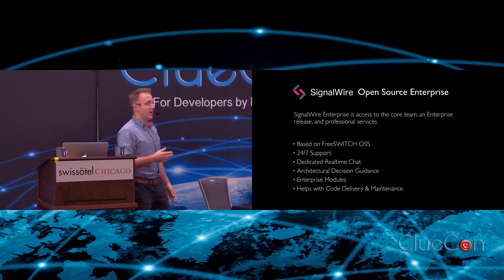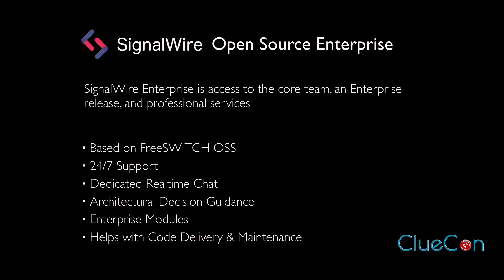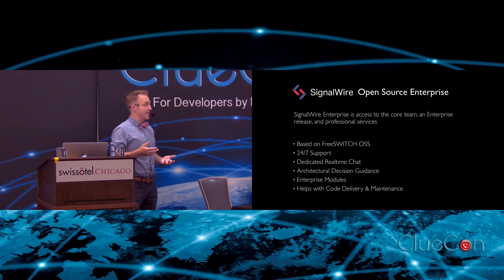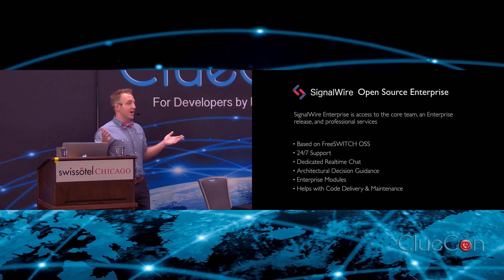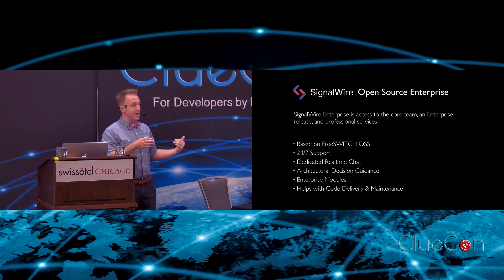Then there's the open-source Enterprise Edition. That is a product you can buy that gives you access to the core team, an enterprise release, and professional services surrounding it. It is based on open-source FreeSwitch. It gives you 24/7 support, dedicated real-time chat, and architectural decision guidance. You get access to the full team to figure out how to solve your problems and help you scale. There are certain modules offered in Enterprise Edition only, such as working with Google's Dialogflow. This really helps with co-delivery and maintenance. If you're a large enterprise needing solid reliability and up-to-the-second bug fixes, you can talk to the core team and get things fixed immediately. No one ever got fired for buying IBM — hopefully in the future people will say no one ever got fired for buying SignalWire, because that is the level of stability we're looking to provide.